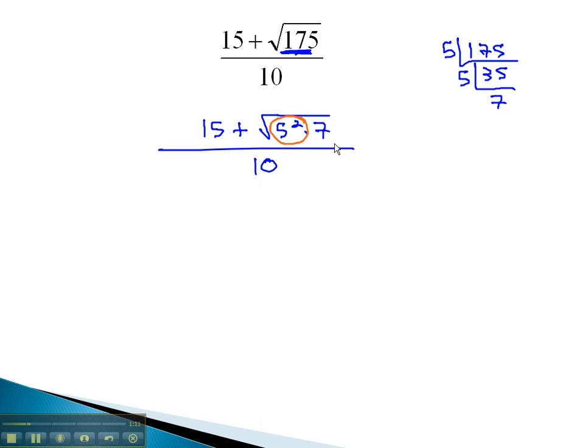Continuing to simplify the radical, we can pull the 5 squared out as just a 5 to the first when we divide the exponent by the index. We now have 15 plus 5 times the square root of 7 over 10.